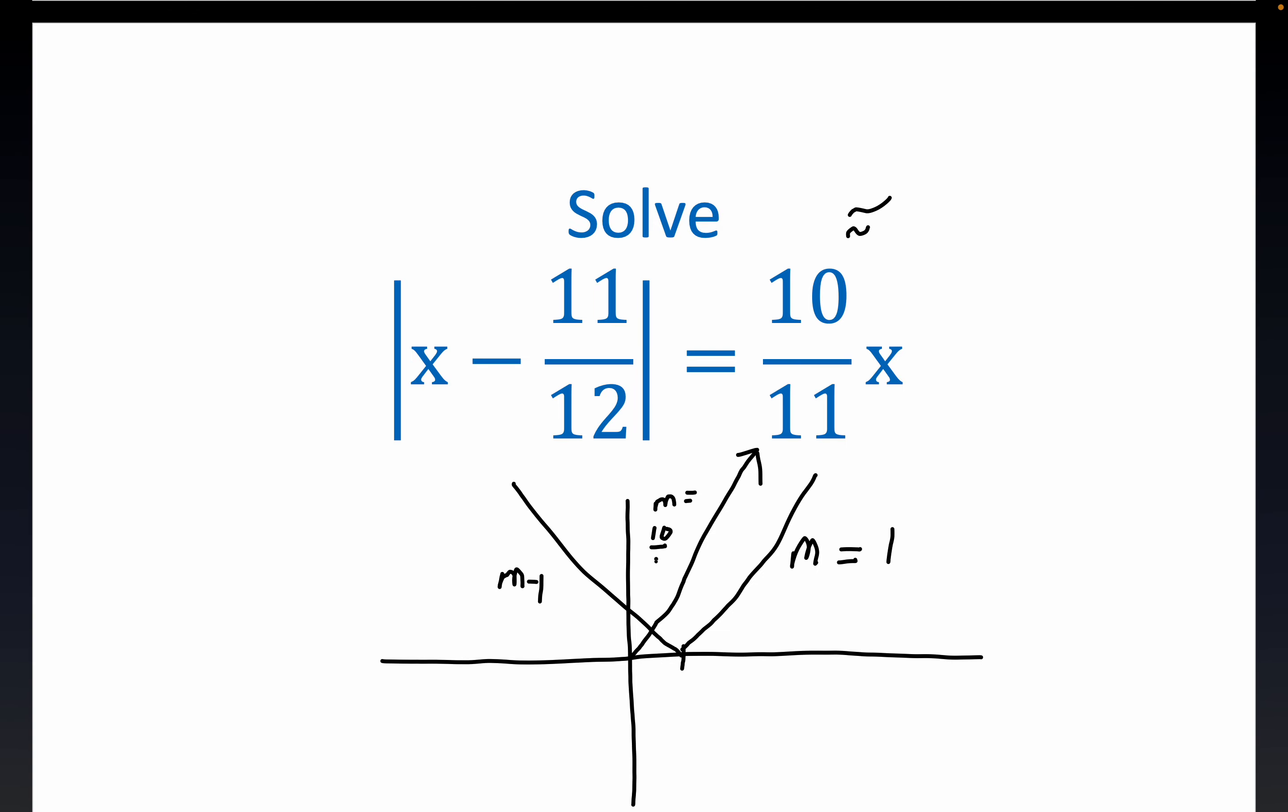So what we can anticipate here is we certainly have one solution here, right along in here. This is very rough sketch. 11 over 12 is very close to 1, so I made the vertex come up a little shy of 1. So we see there's going to be one solution here, but what about the rest of the solutions?